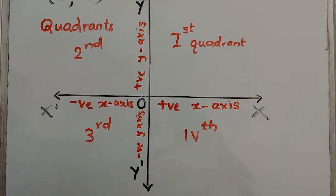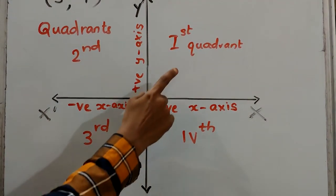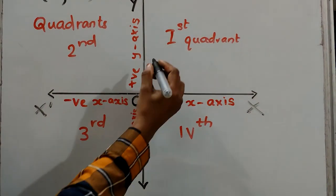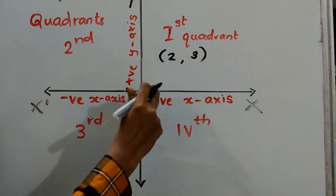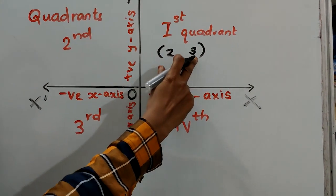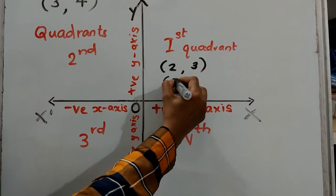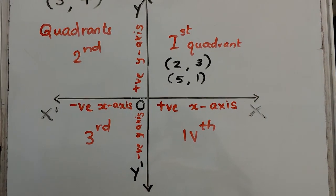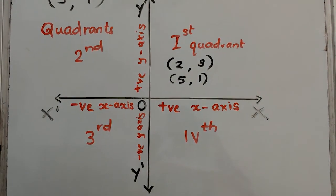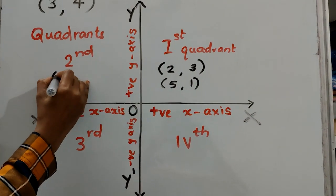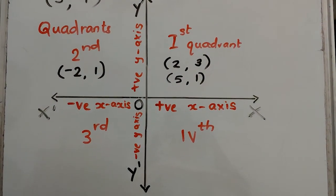In the first quadrant, the positive x-axis and positive y-axis are taken, so both the x coordinate and y coordinate will be positive. For example, (2, 3): 2 is the x coordinate — positive; 3 is the y coordinate — also positive. Another example: (5, 1). In the second quadrant, the negative x-axis and positive y-axis are taken, so the x value should be negative and the y value should be positive. One example is (-2, 1).